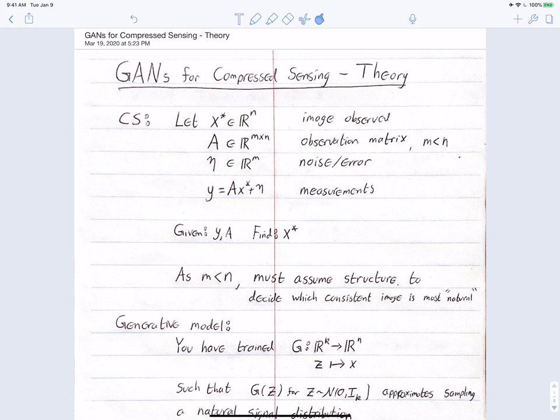The compressed sensing problem is: given y and A, find x*. Since m is less than n, we have an underdetermined problem, which means by basic linear algebra there are infinitely many solutions consistent with the measurements y. In order to identify the correct image, we must assume some sort of structure.